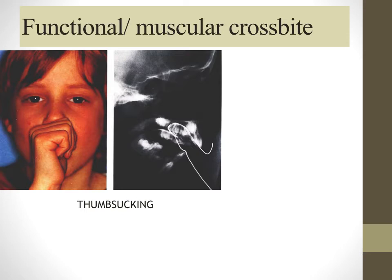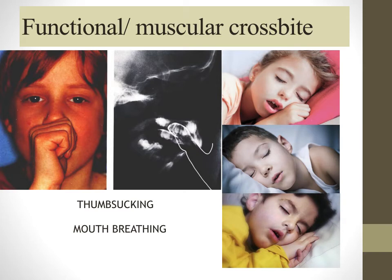With the tongue down, only the cheeks and lips have a restraining effect on the dentition from outside, and there is no tongue to counteract this force from inside. Hence the entire maxillary arch collapses inside the mandible, creating a muscular crossbite. Similarly, mouth breathing also takes the mandible and tongue down, altering the buccinator mechanism equilibrium and producing a constricted maxilla.